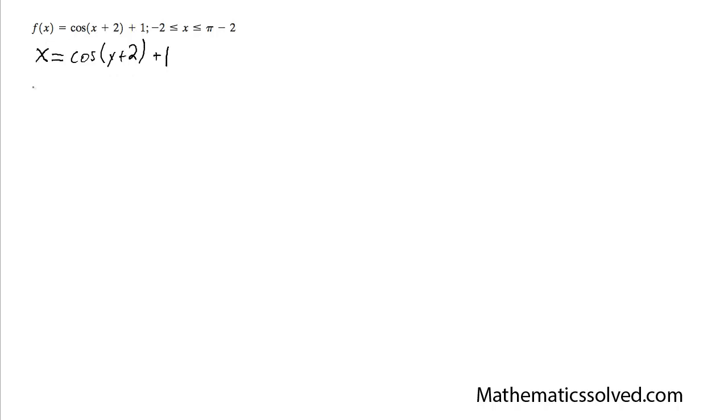So then I'm going to go ahead and I'm going to start getting y by itself again, start doing that by subtracting 1 is equal to cosine of y plus 2. And take the inverse cosine, get y plus 2 by itself, x minus 1, and then I'm subtracting 2 from that.